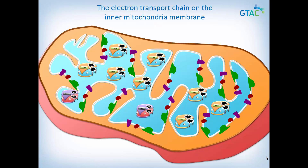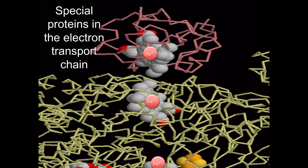Look at the inner mitochondria membrane. There are clusters of proteins arranged along the inner mitochondria membrane — these clusters make up the electron transport chain. This image shows the structure of two of these proteins located close together: a small one shown in pink and a larger one shown in yellow. These proteins contain special molecules called heme groups, and in the center of each heme group is an iron ion. These iron ions act a little like an electric wire that electrons can move along.